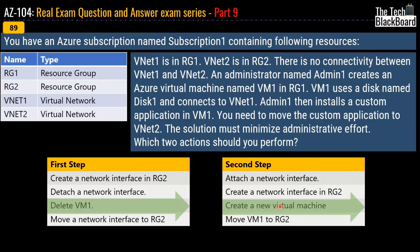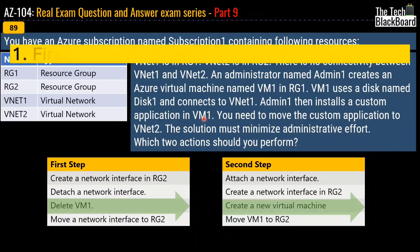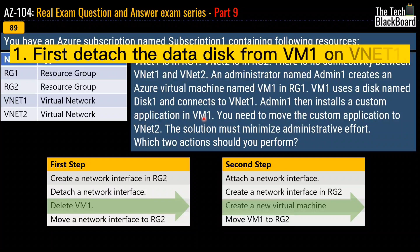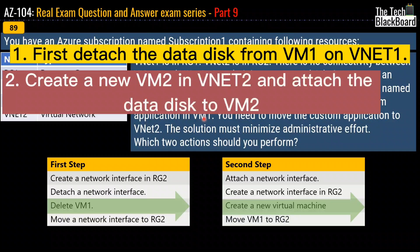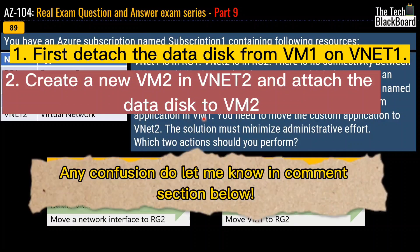To summarize: you have a custom application on VM1 residing on VNet1. You want to move it to another virtual machine in VNet2. The best way is to detach the data disk from VM1 on VNet1 and attach it to another virtual machine in VNet2. If you still have confusion around this question, do let me know in the comment section.